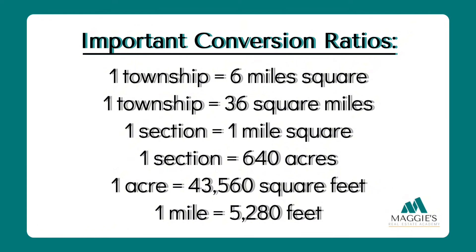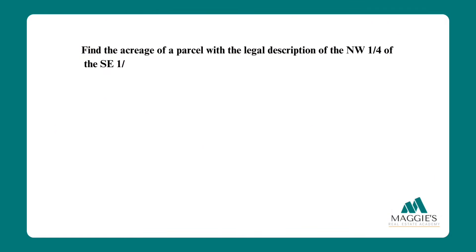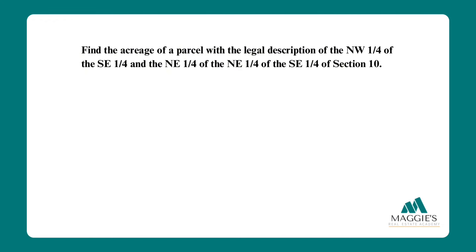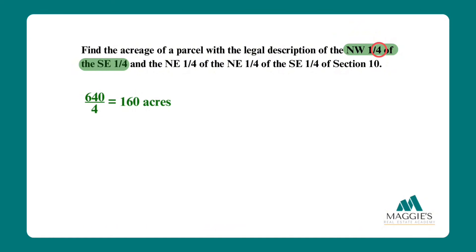Here's a common exam question covering this concept: 'Find the acreage of a parcel with the legal description of the northwest one-fourth of the southeast one-fourth, AND the northeast one-fourth of the northeast one-fourth of section 10.' Notice the word 'and' — this indicates two adjacent tracts within a single parcel. We start with 640 acres. For the first parcel (highlighted in green): 640 ÷ 4 = 160 acres, then 160 ÷ 4 = 40 acres.